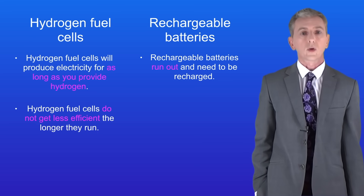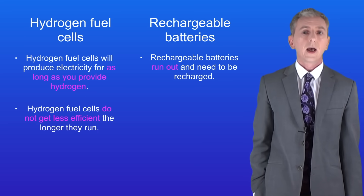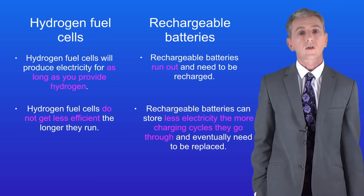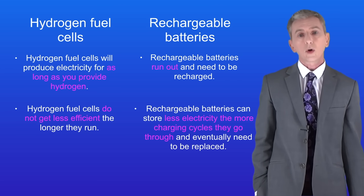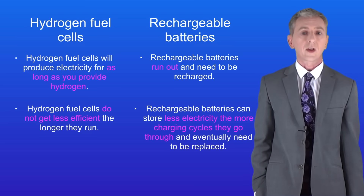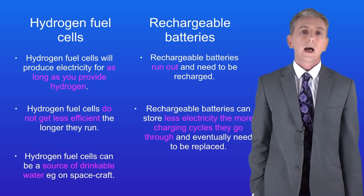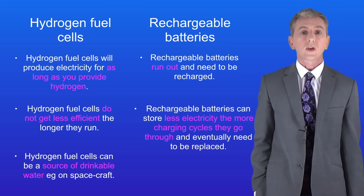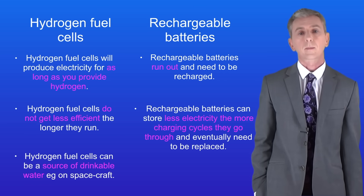Secondly, hydrogen fuel cells do not get less efficient the longer they run. However, rechargeable batteries can store less electricity the more charging cycles they go through and eventually they need to be replaced. Hydrogen fuel cells can also be a source of drinking water — for example for astronauts on spacecraft.